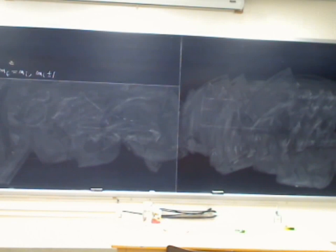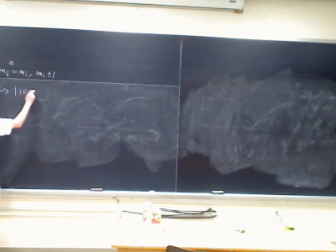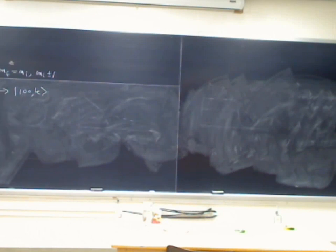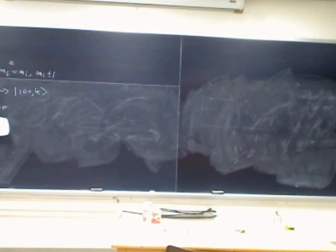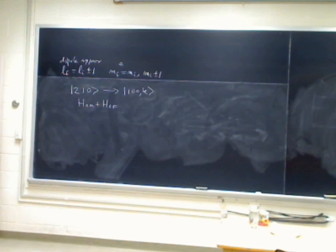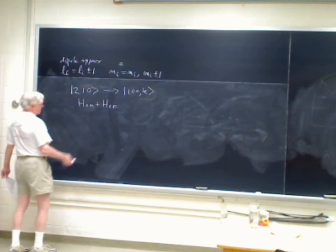We're starting with the state 2,1,0 — I'm taking M=0 for simplicity — and that's going to go to the ground state 1,0,0 plus a photon of momentum K. Both of these are eigenstates of H_0M plus H_0 field, the matter and field Hamiltonians. Part of the matter Hamiltonian is actually the scalar potential part of the field Hamiltonian — the E² longitudinal term which, because of Gauss's law and the Coulomb gauge condition, gets turned into the E minus E² over R.